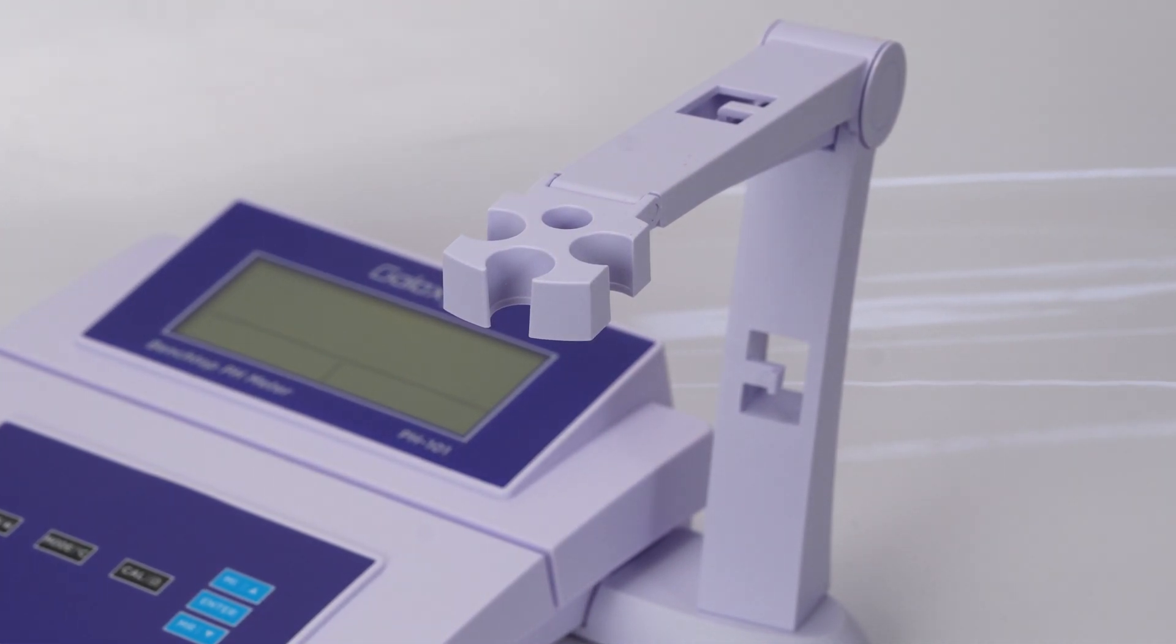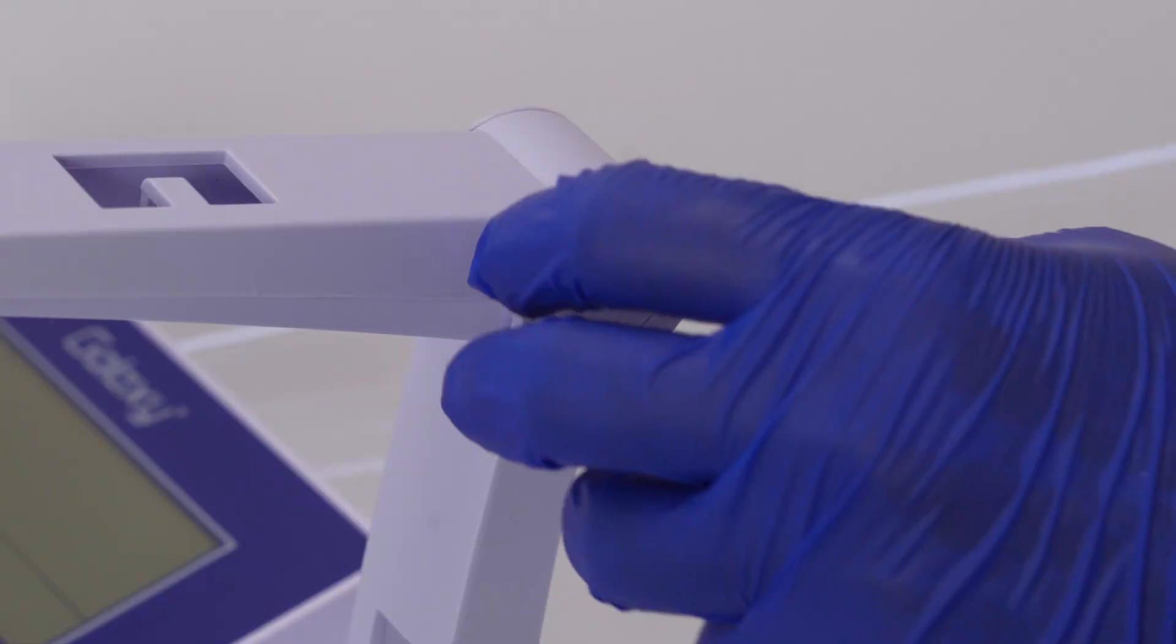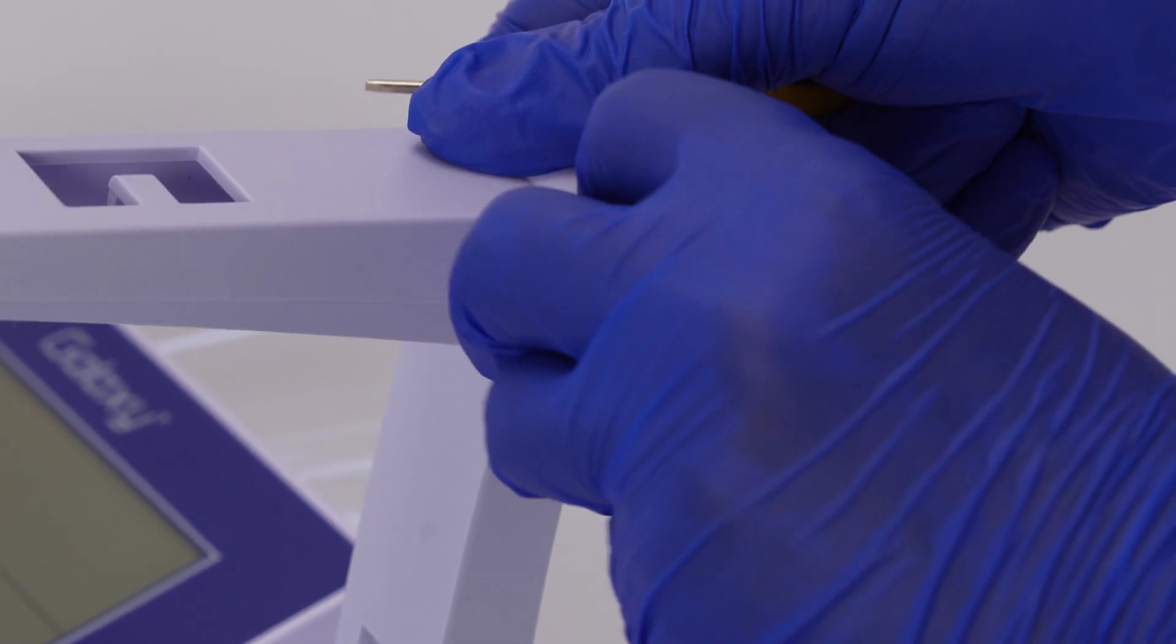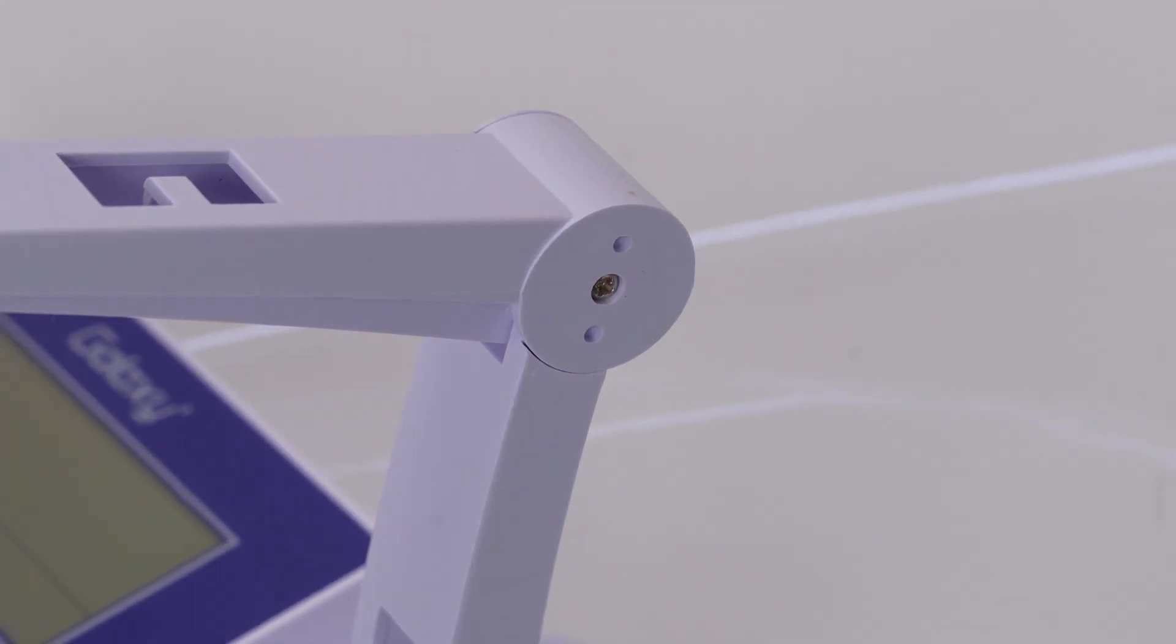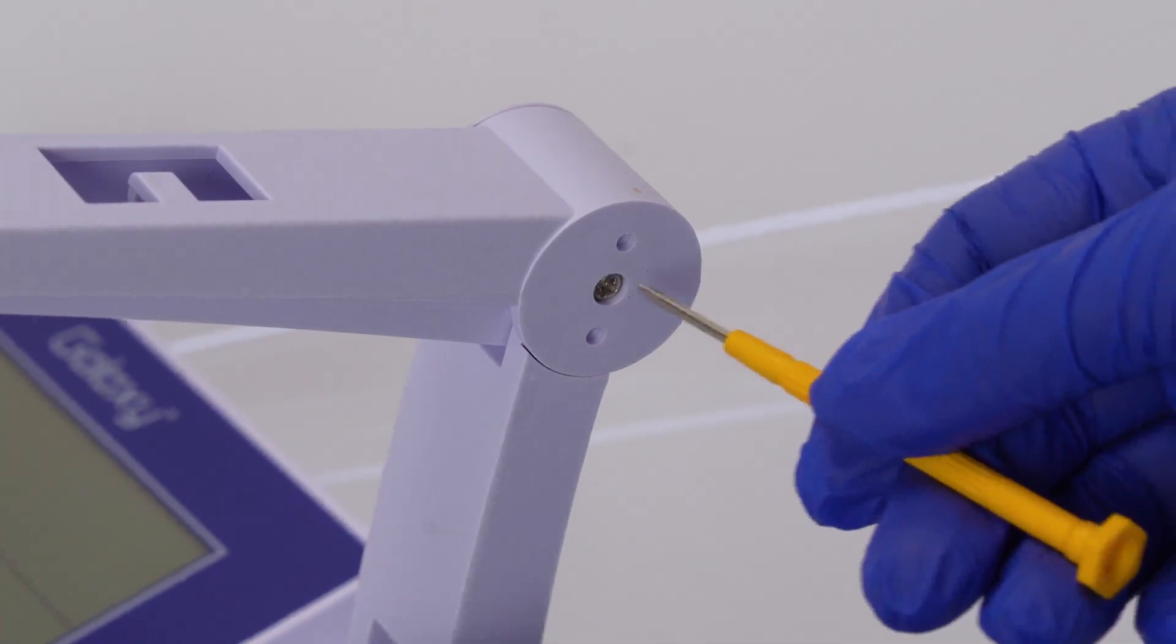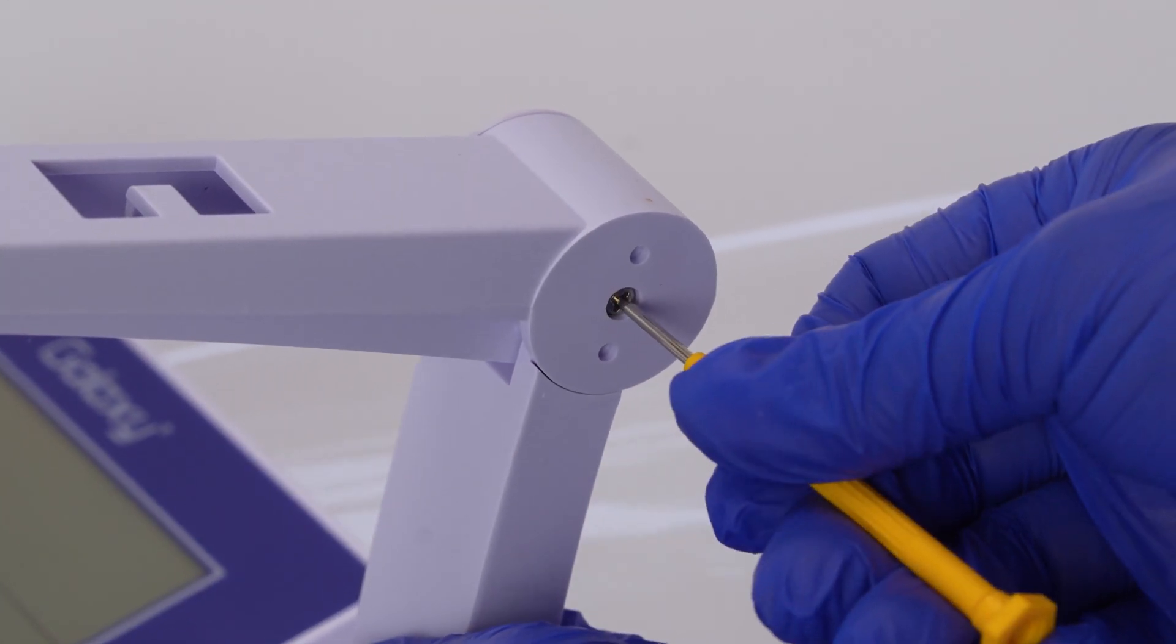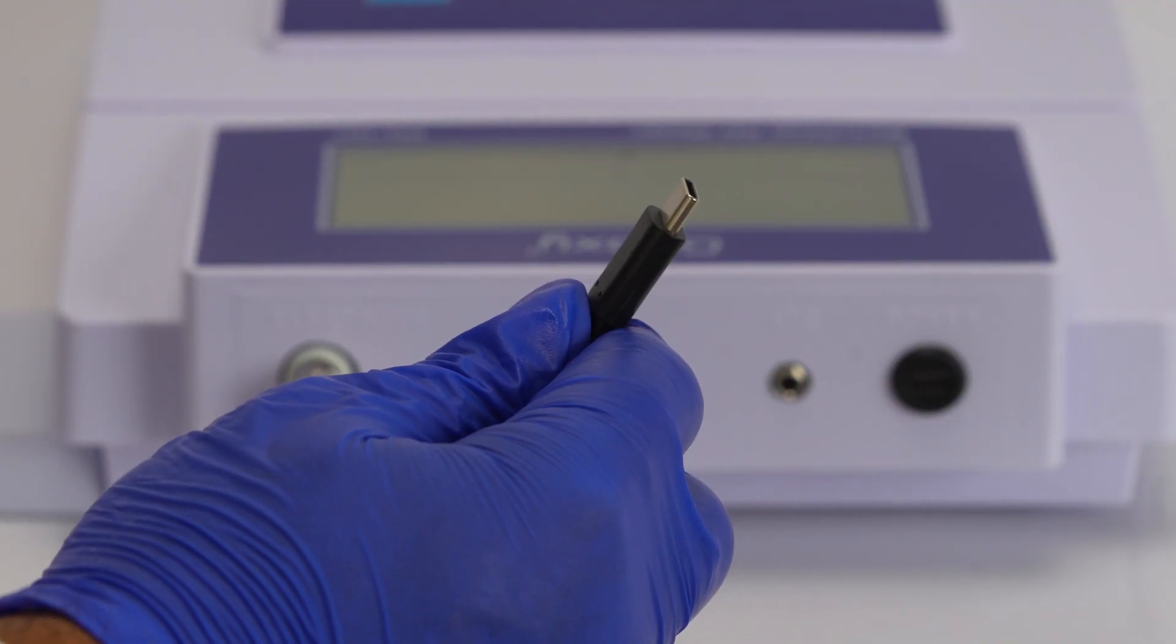If the electrode arm isn't stable, remove the plastic cover on the right side and use a screwdriver to adjust the screw until it holds the desired position. Connect the USB cable to the meter, then plug the DC 5 volt power adapter into the wall outlet.